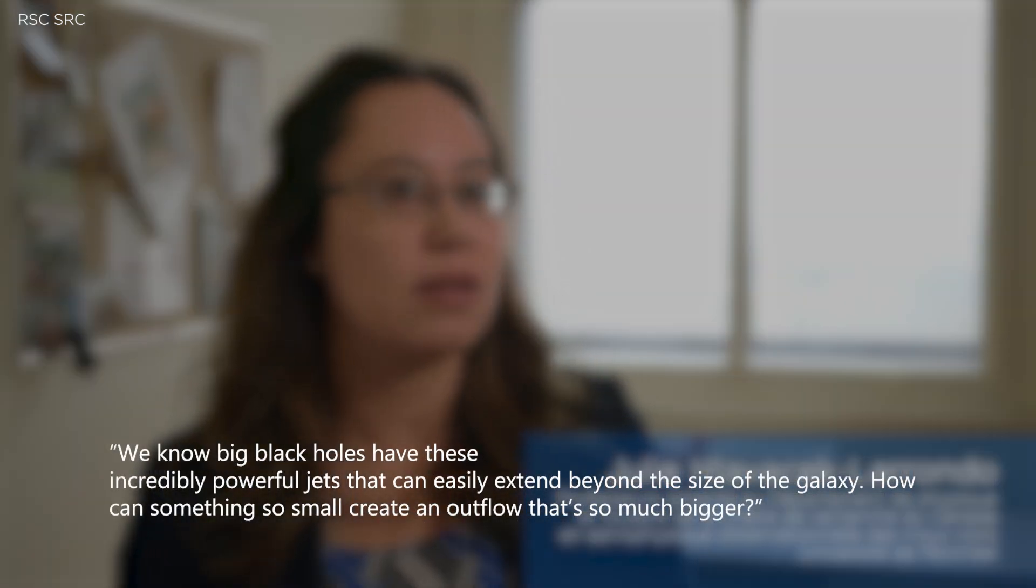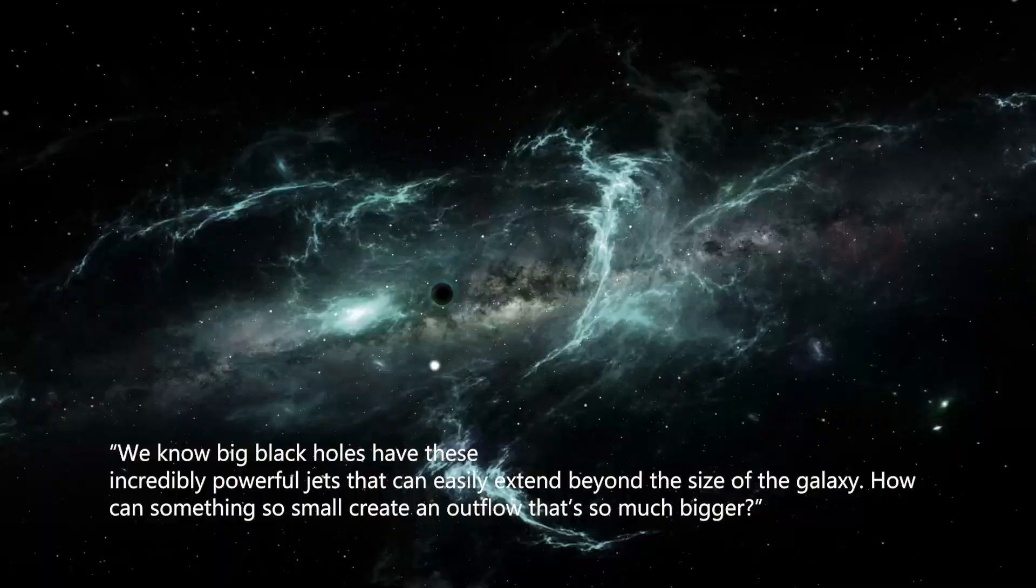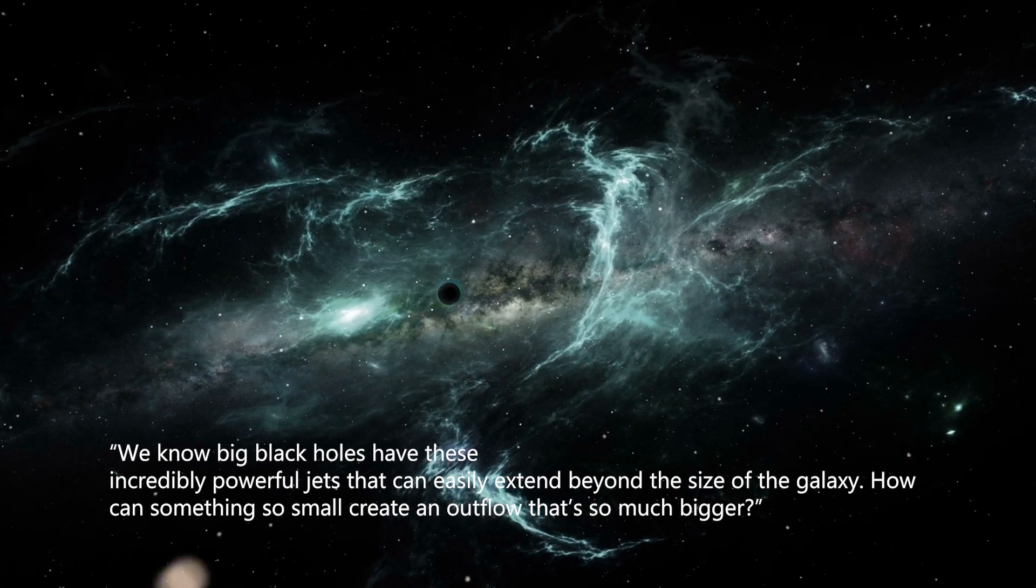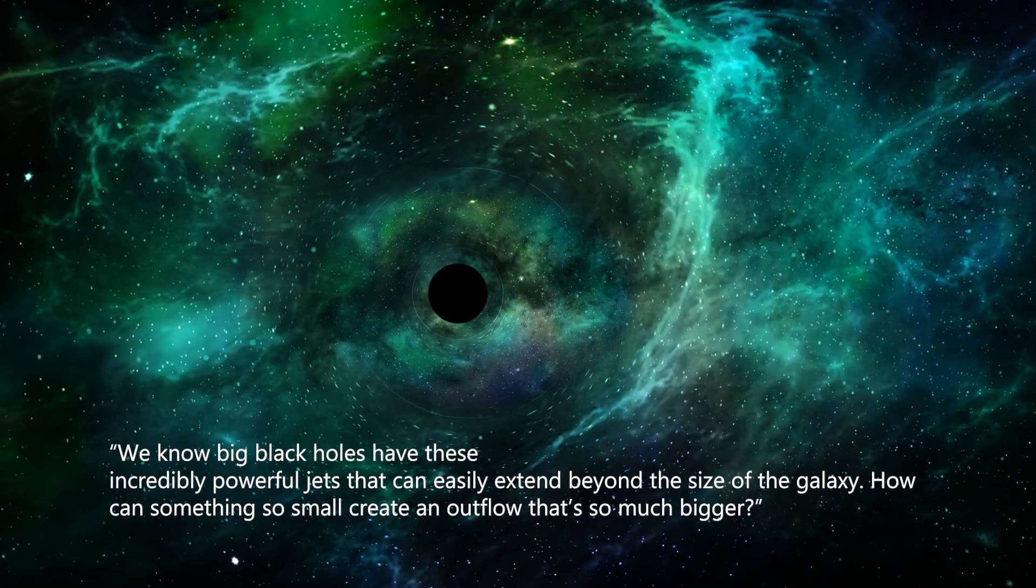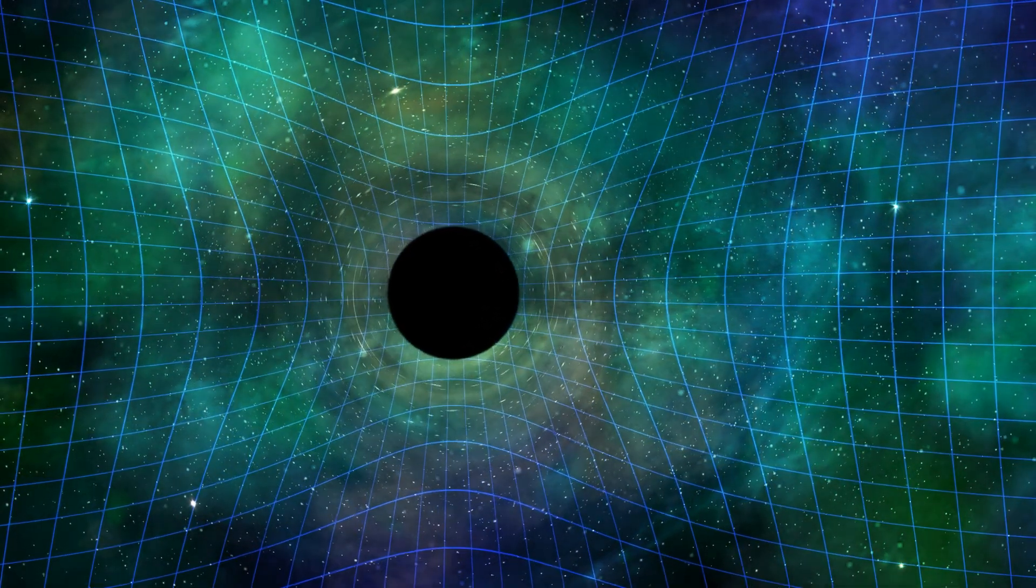We know big black holes have these incredibly powerful jets that can easily extend beyond the size of the galaxy. How can something so small create an outflow that's so much bigger? The size of the jet can be used to estimate the size of the black hole.